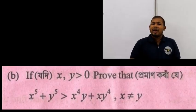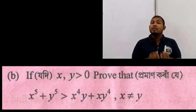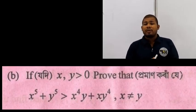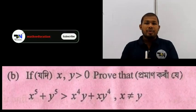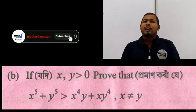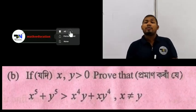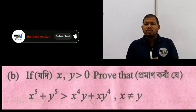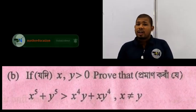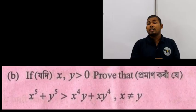The question is: x to the power 5 plus y to the power 5 is greater than x to the power 4 into y plus x into y to the power 4. Here, x and y are positive quantities.